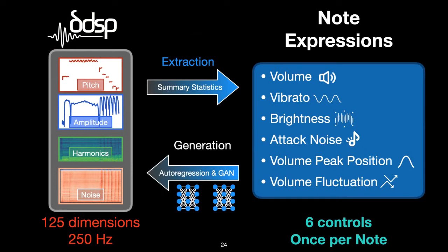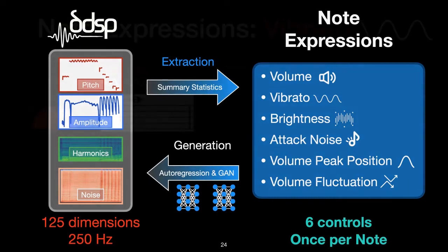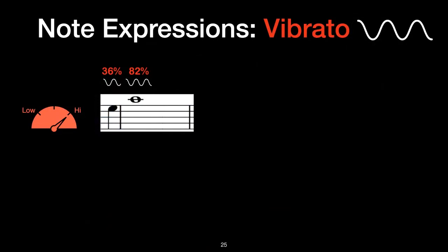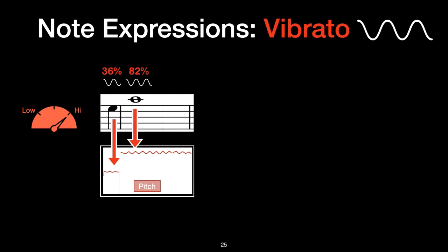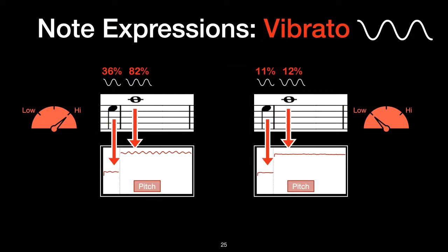To generate these synthesis parameters from a set of note expressions, we use an autoregressive RNN and GAN. If you're curious about the details of this, you can see our paper for more information on that. But I just want to look at one of these note expressions just to get an idea for how they work. So we'll look at vibrato, which describes the amount of oscillation or wobble in the pitch of a note. In MIDI DDSP, we can set these values for each note. So here we set vibrato at 36% for the first note and 82% for the second note. And we can see that the amount of oscillation of the pitch contour for the first note is smaller than the second. We can also set these values very low and just turn off vibrato completely. Notice how there's just one control that lasts for the entire duration of the note, no matter how long the note lasts.